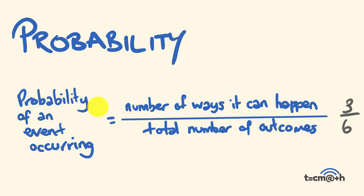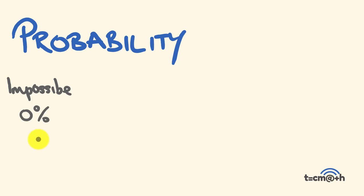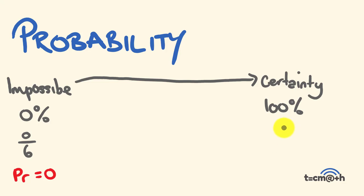Another important thing to think about is the entire range of probabilities. This goes from something being totally impossible — which has a 0% chance of occurring. For example, with a dice, what's the chance of throwing a 7? There's a 0 out of 6 chance, so we say the probability is 0. It ranges right through to absolute certainty — a 100% chance of it occurring. With a dice, rolling any number between 1 and 6 gives a 6 out of 6 chance, and we say the probability equals 1, because 6 divided by 6 equals 1, and 100% as a decimal equals 1.